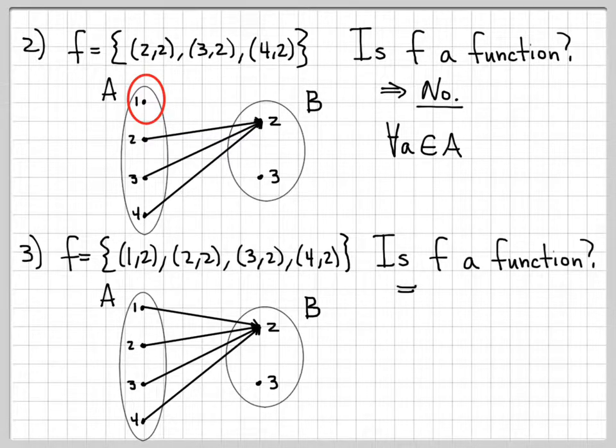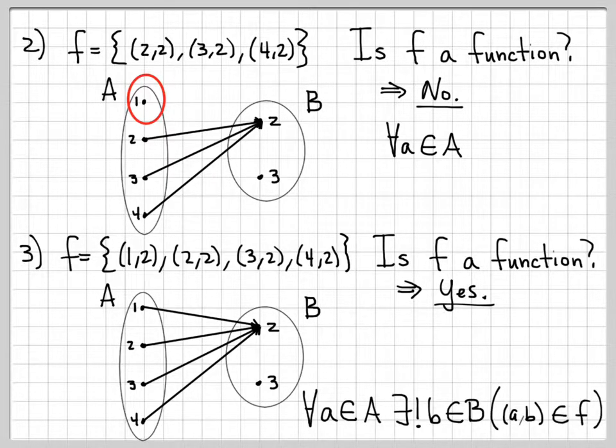For all a in A, there's exactly one b in B such that (a,b) is in F. You might wonder, why is this not a problem? Well, if you notice in the definition, the definition doesn't say anything about having to cover every element of B. It only talks about having to cover every element of A. So having this missing point on the right side is not an issue. Everything on the left side is good. Every single point has an arrow coming off of it, and every point has only one arrow coming off of it. So this is indeed a function.